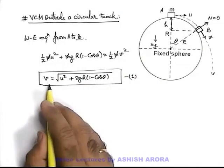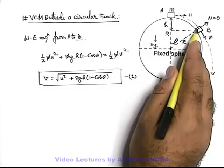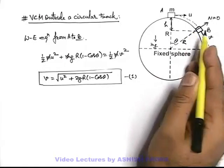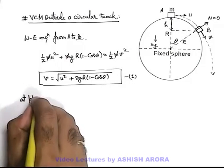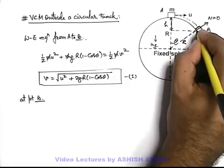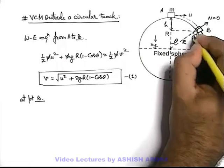We can use this equation to find out the speed at any position when it is following the circular track. Now at this point B we can also write, body will be experiencing mg in downward direction.